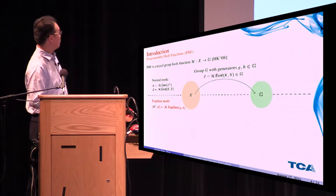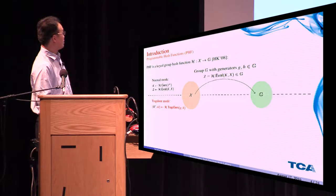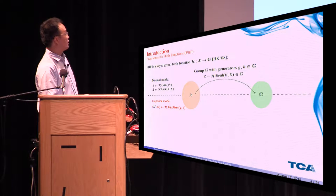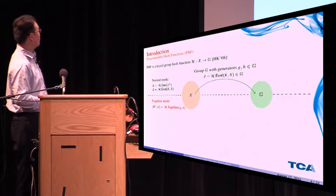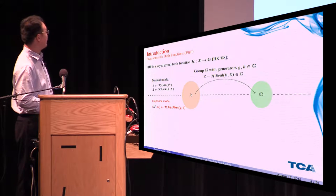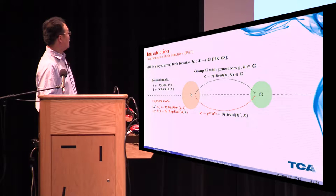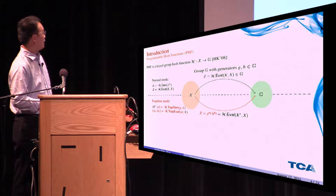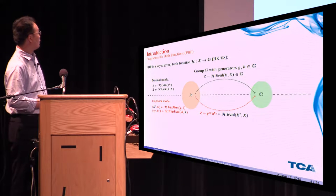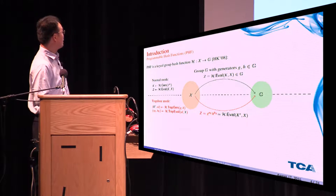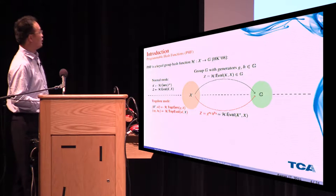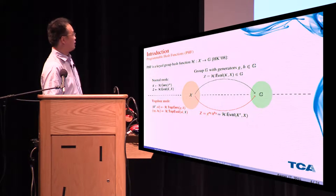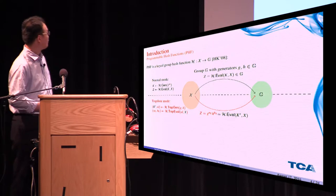There is a trapdoor mode, which is the algorithm HTrapG. It takes as input G and H, which are generators of this group G, and outputs the key prime together with trapdoor td. And then the HTrapEval maps this X to a pair of AX and BX, such that the HValue with the key prime on this X equals to G to AX times H to BX.